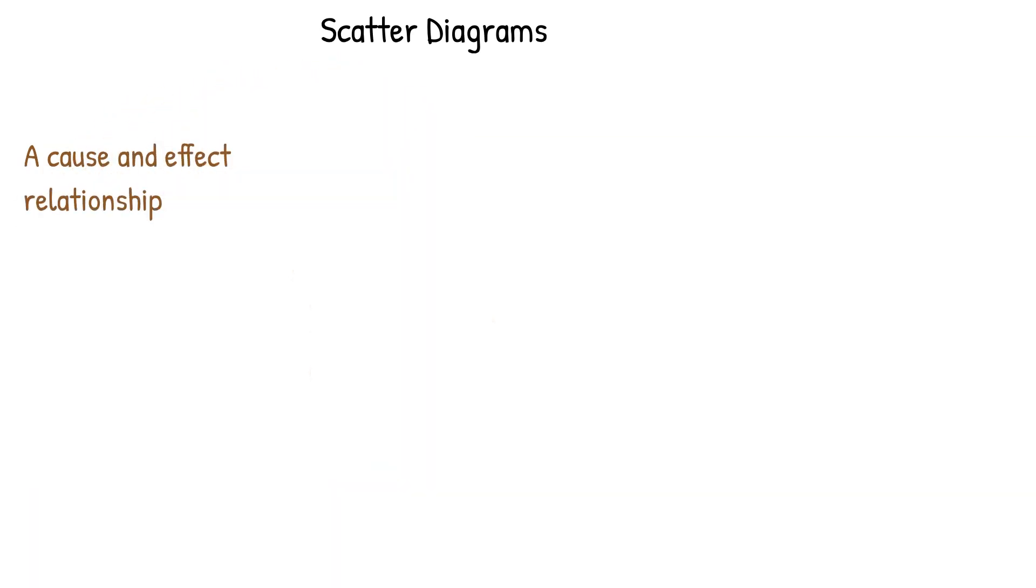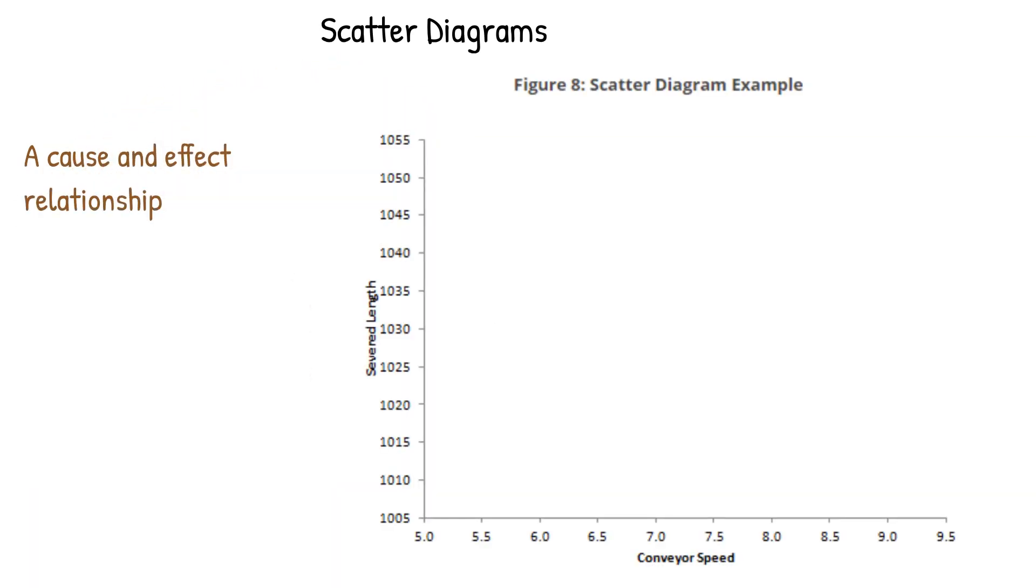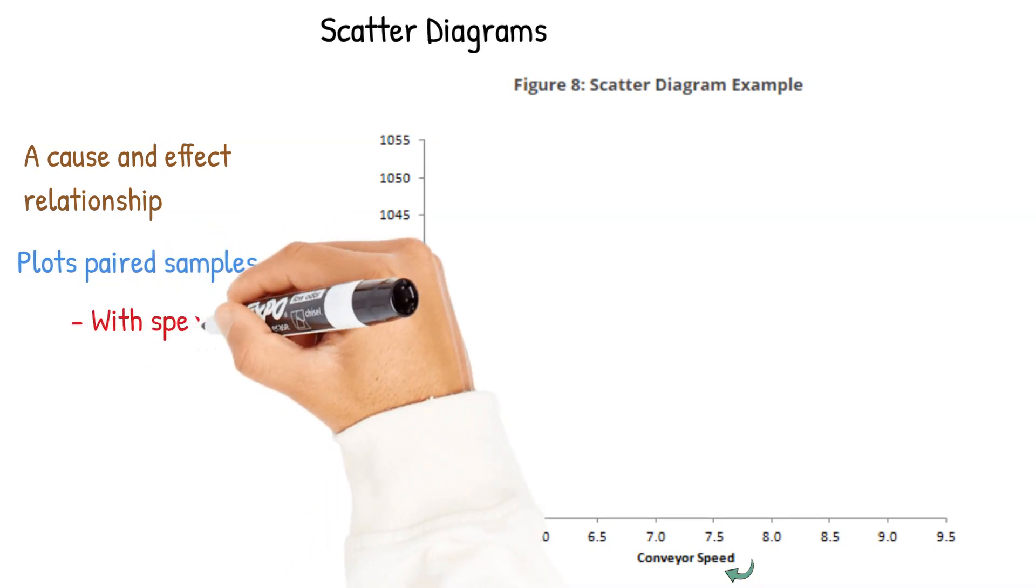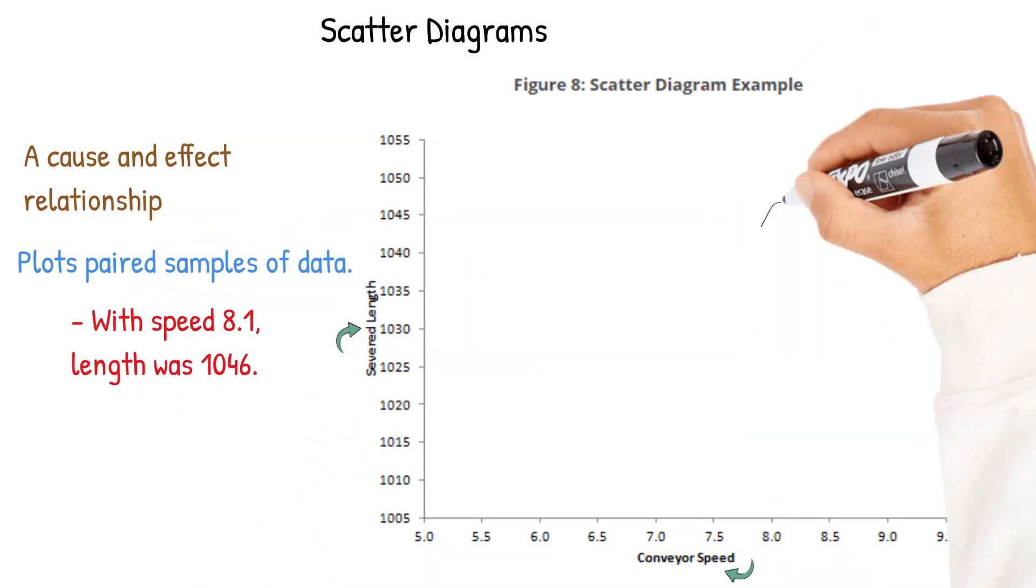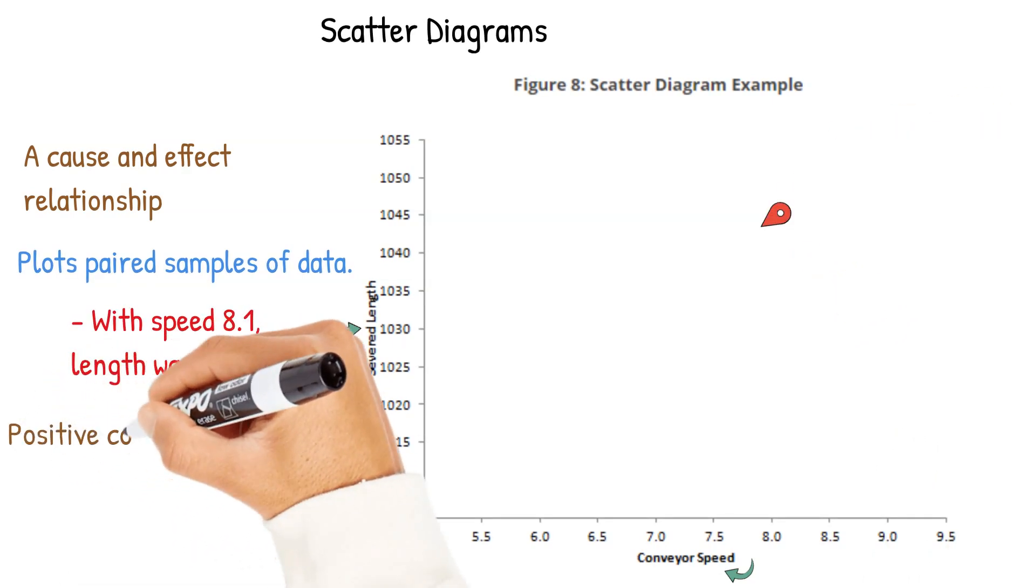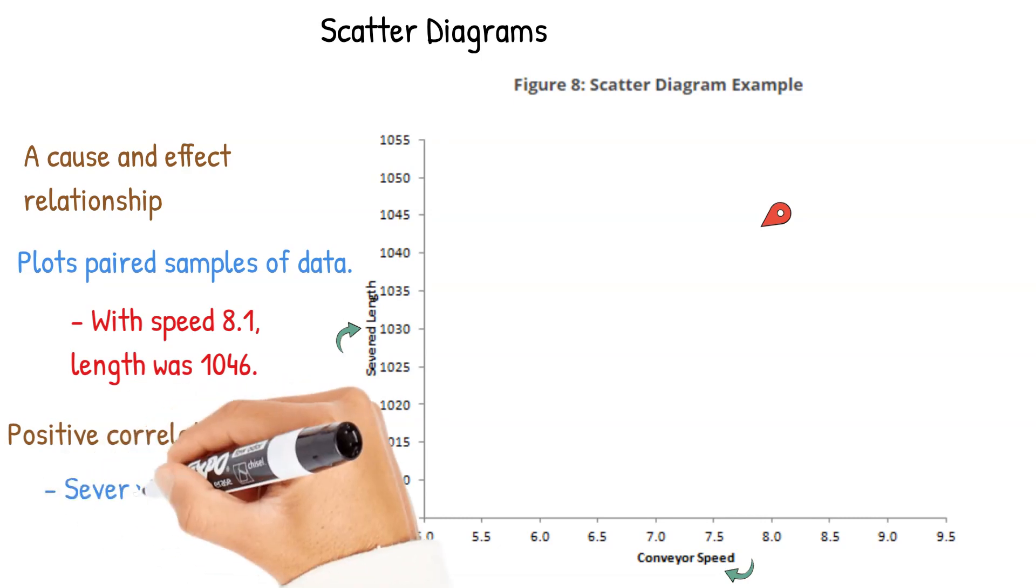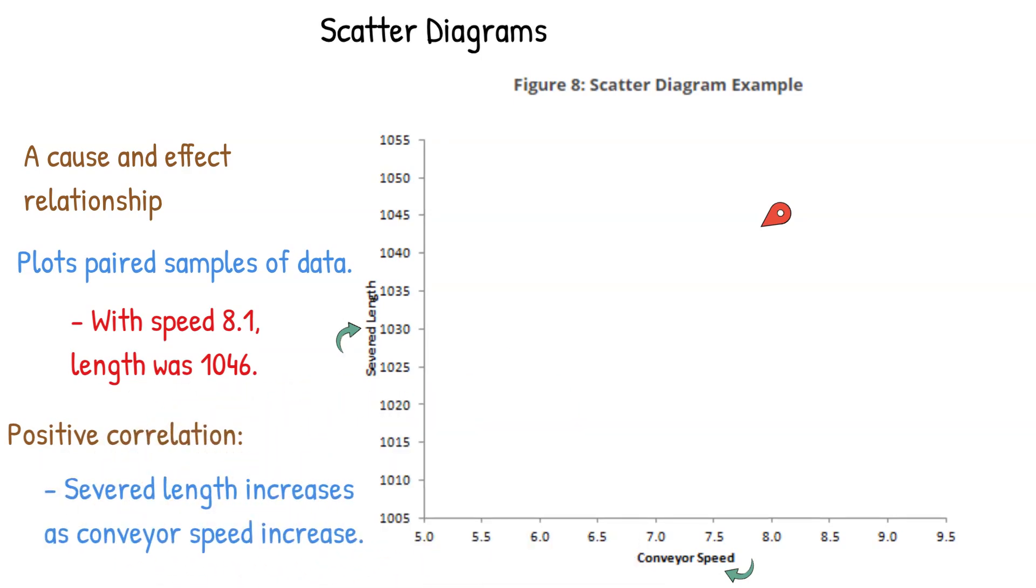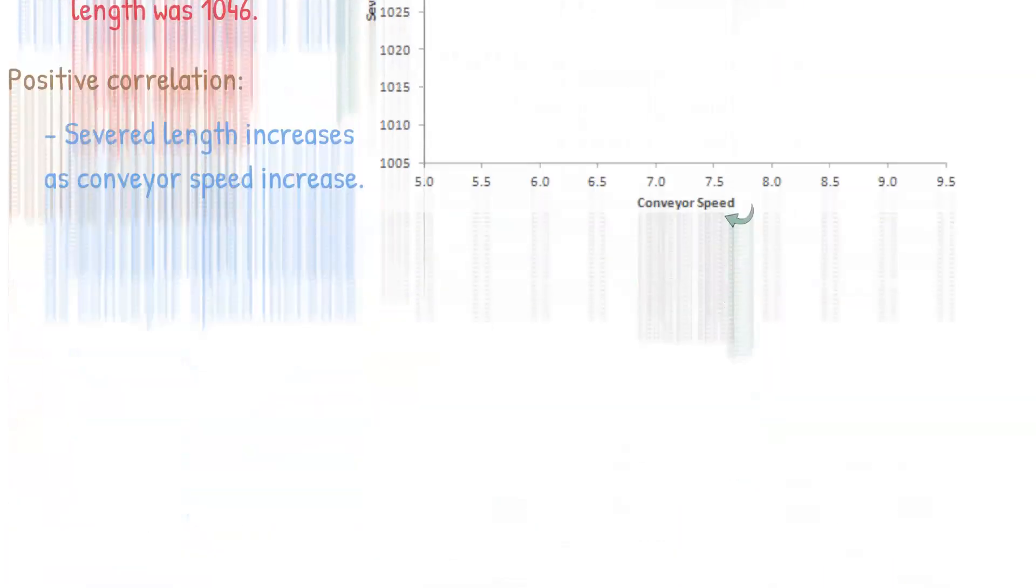The last tool was a scatter diagram. It's a cause and effect relationship. You're plotting two variables against each other to see if there's a correlation. In this example from his book, he has severed length versus conveyor speed. When the speed was 8.1, the length was 1046. You can see the scatter diagram shows a positive correlation. Severed length seems to increase as conveyor speed increases.